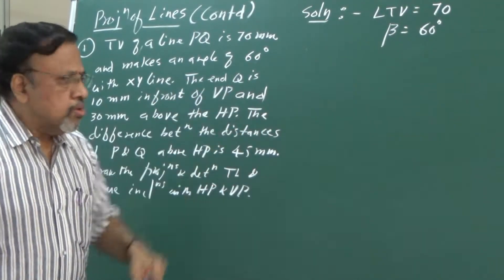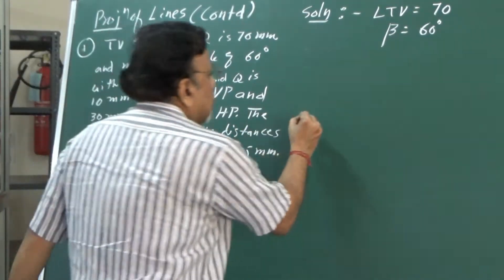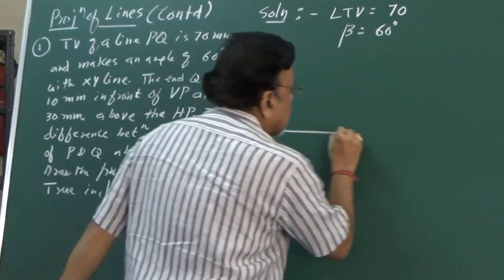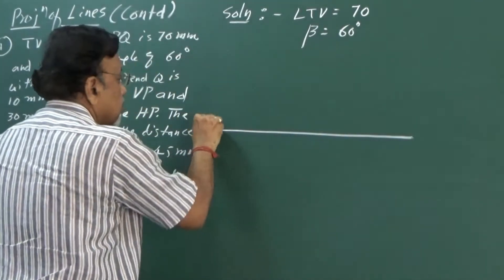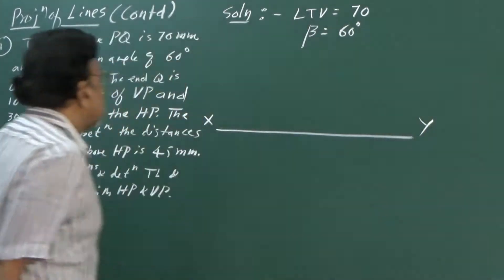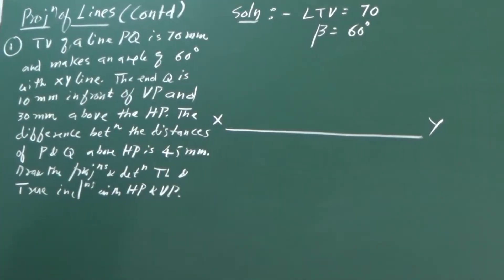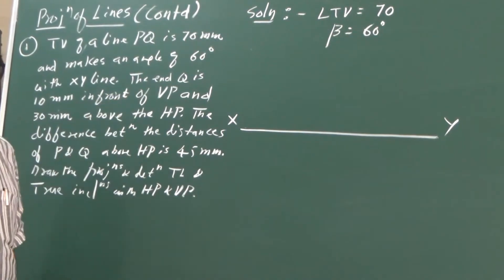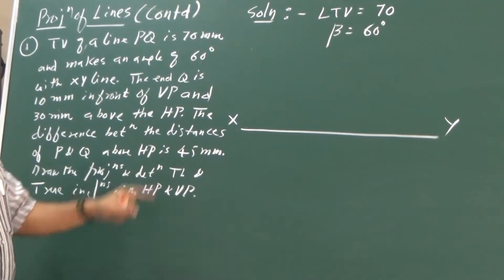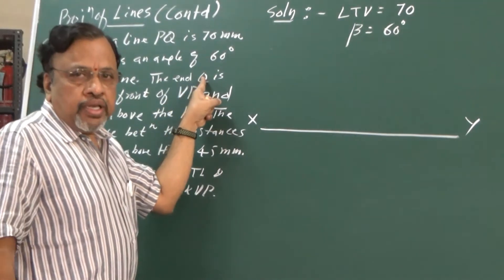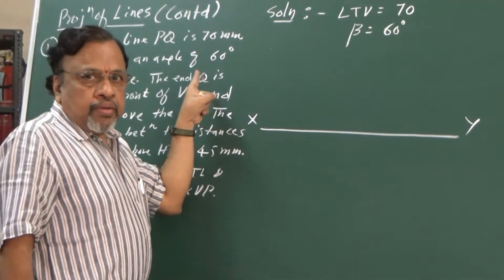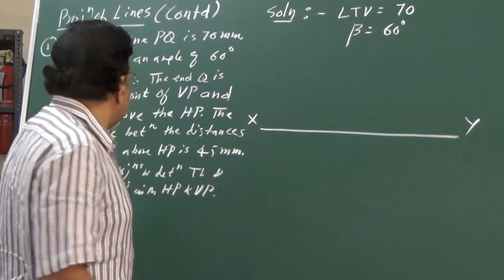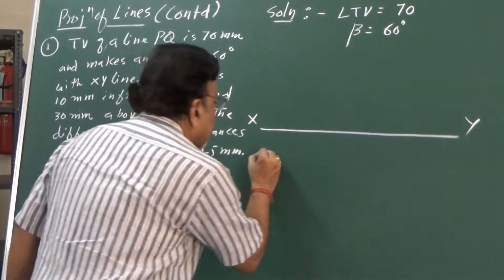As usual, first draw the XY line. It is given that end Q is 10 mm in front of VP, which means the top view point of Q is below the XY line by 10 mm. Let me indicate that.